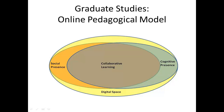Social presence fosters the establishment and maintenance of a collegial, collaborative, and supportive environment in which students may freely and safely exchange and share their beliefs, views, and opinions. Collaborative learning then occurs in an environment in which the cognitive presence, social presence, and digital space intersect — an environment in which members of a community of inquiry construct meaning through sustained communication.